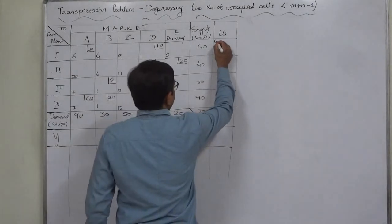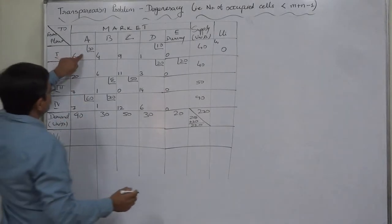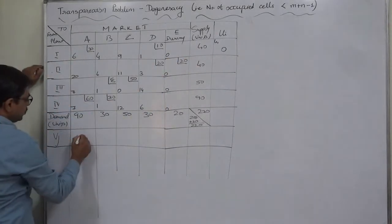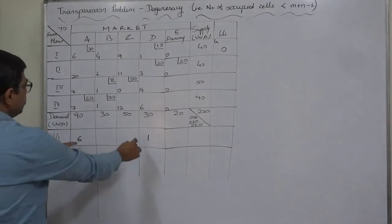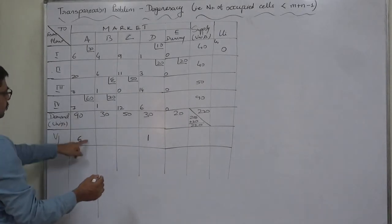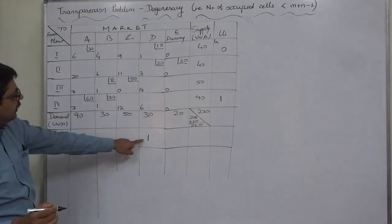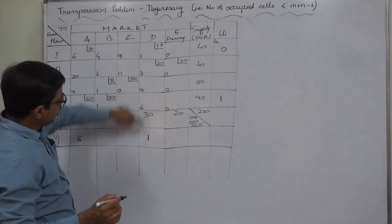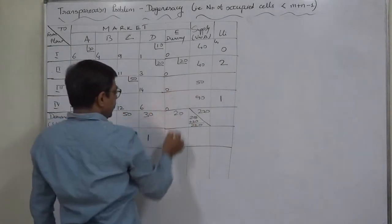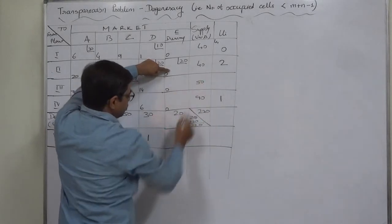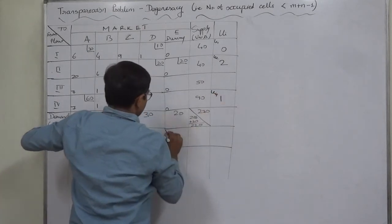I'll write U1 = 0. Using C minus U = V: 6 minus 0 is 6, and 1 minus 0 is 1, giving us V1 = 6 and V4 = 1. On the basis of these, using C minus V: 7 minus 6 gives U2 = 1, and 3 minus 1 gives U3 = 2. Then using C minus U: 0 minus 2 gives V5 = minus 2.